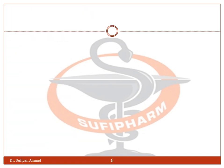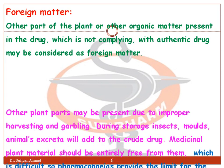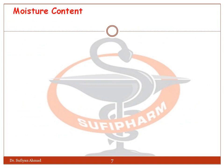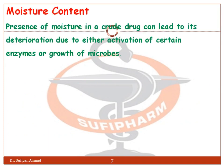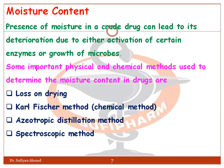Foreign matter refers to other parts of the plant or other organic matter present in the drug which do not comply with the authentic drug and may be considered as foreign matter. Regarding moisture content, the presence of moisture in a crude drug can lead to its deterioration due to activation of certain enzymes or growth of microbes. Some important physical and chemical methods are used to determine moisture content in the drug.